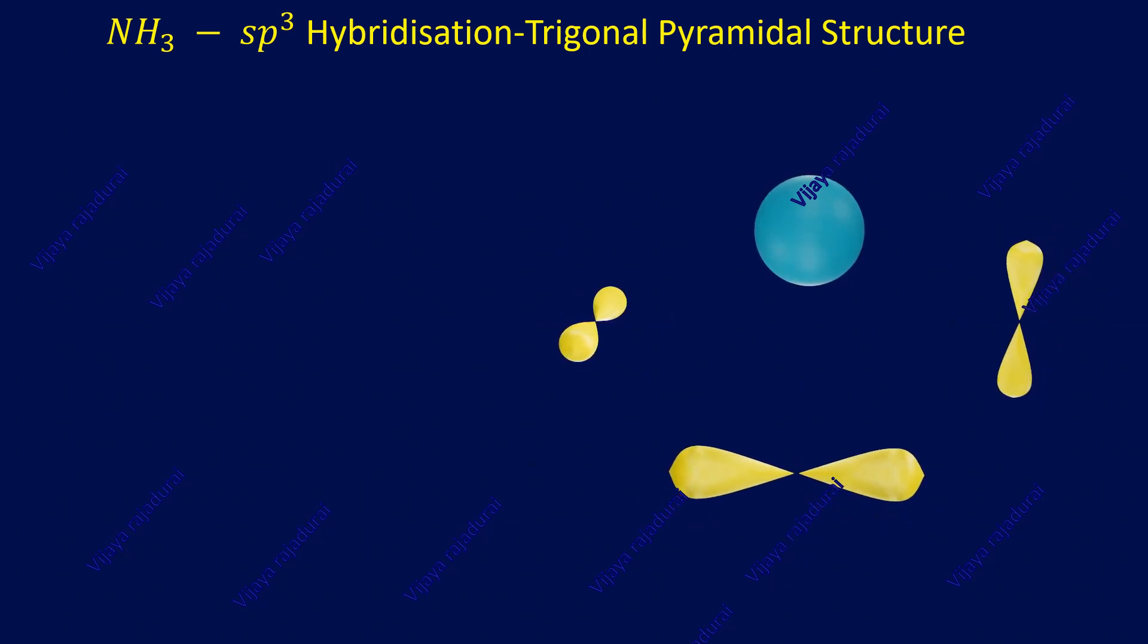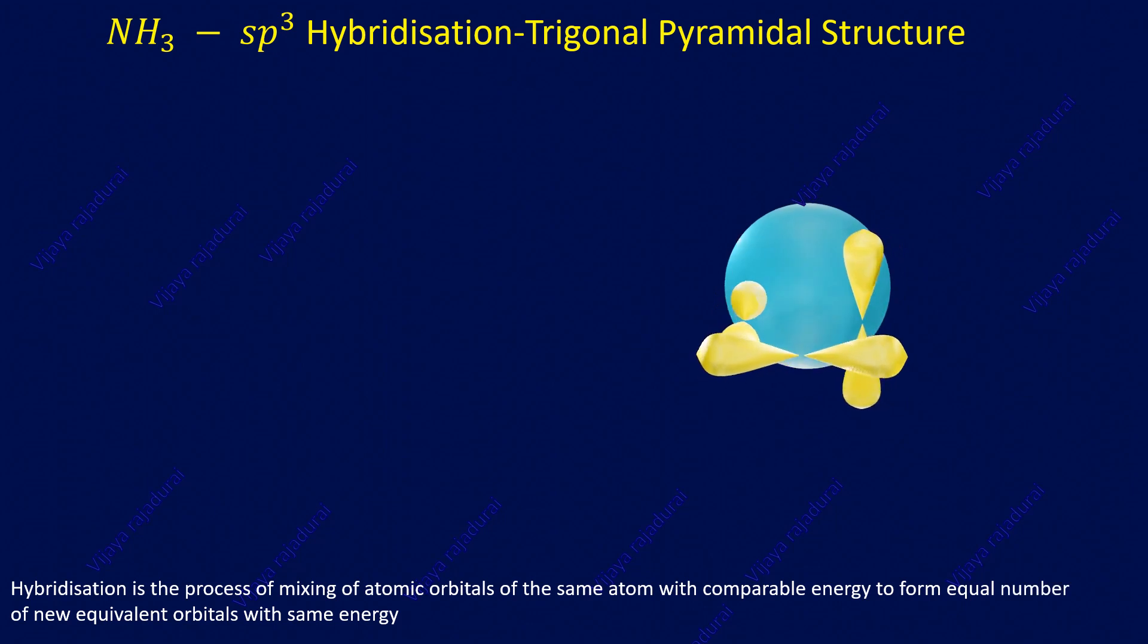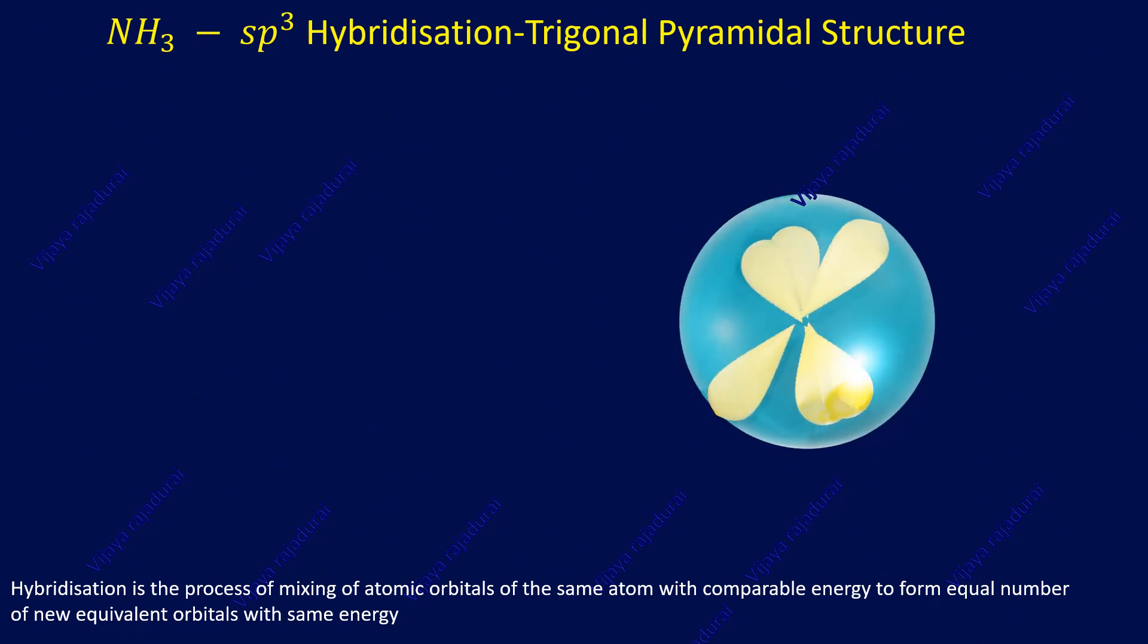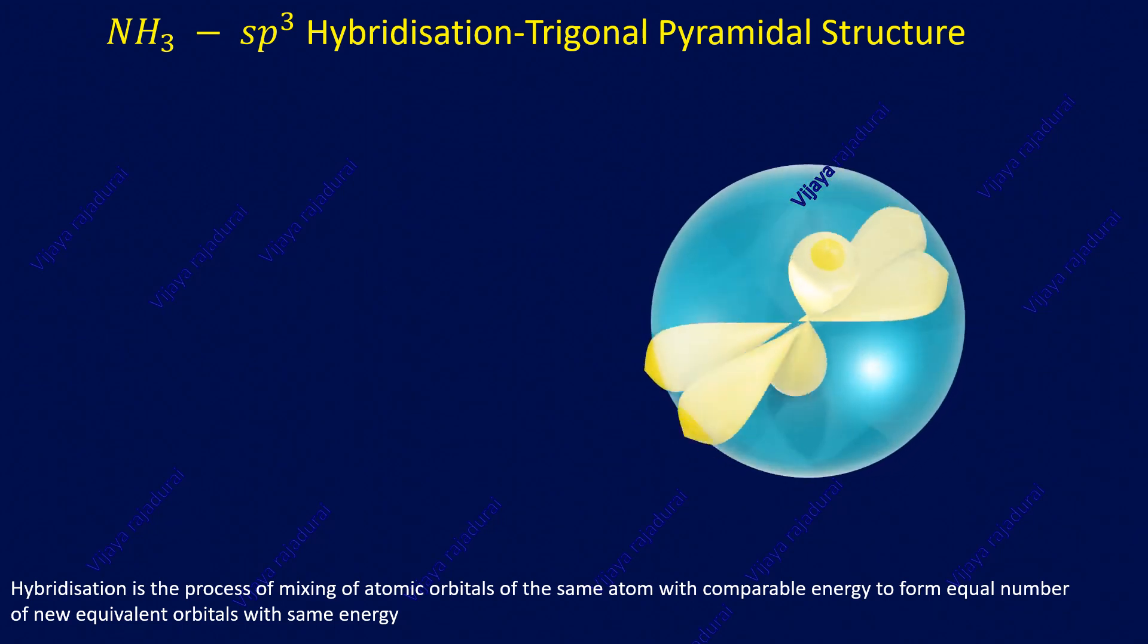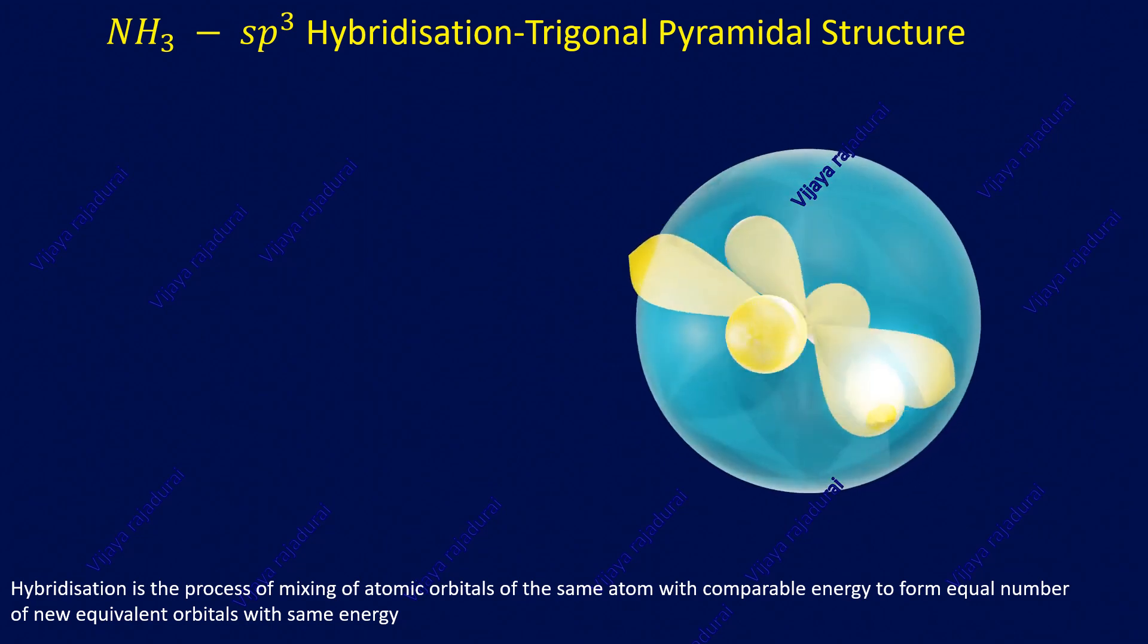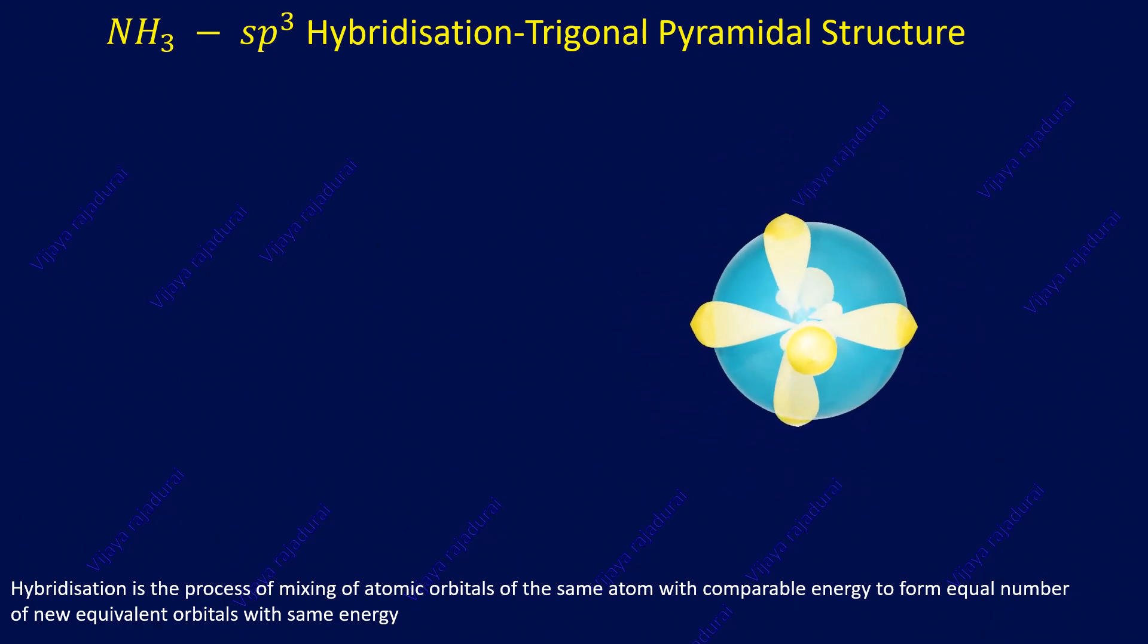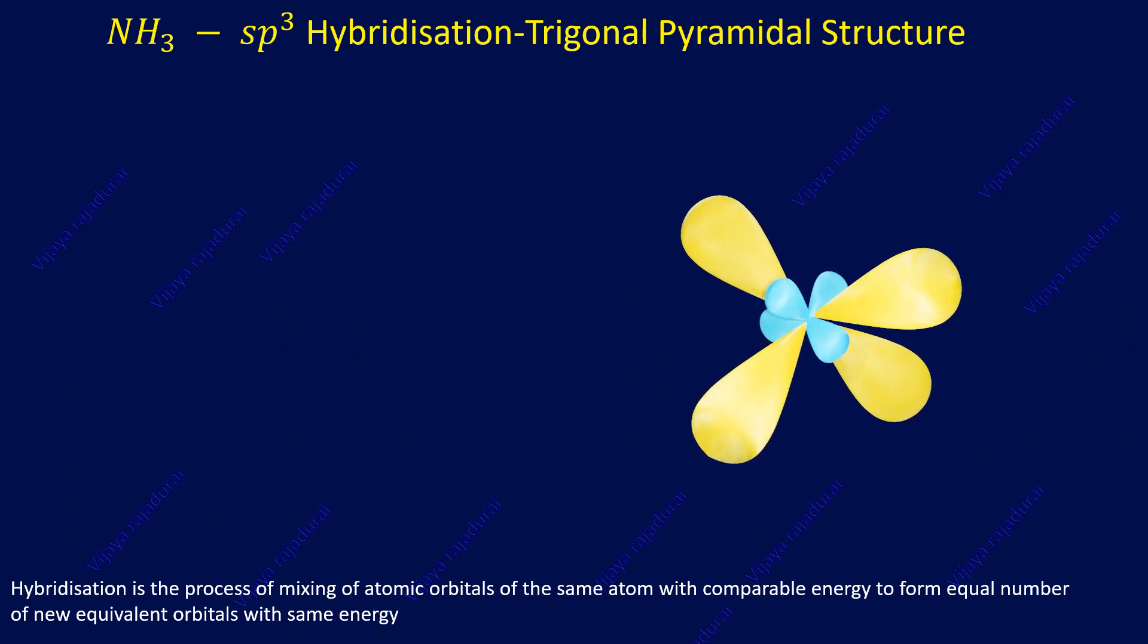These valence orbitals are mixing together, that is, hybridized together, giving the same energy and the same shape of new 4 hybridized sp³ orbitals. What is hybridization? Hybridization is the process in which different valence orbitals with comparable energy are mixing together, giving equivalent energy of the same orbitals.